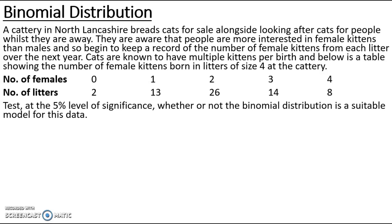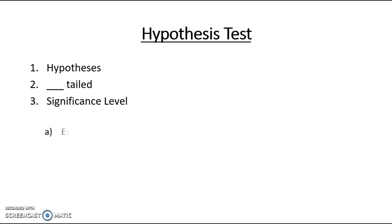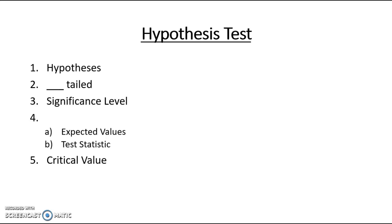Test at the 5% level of significance whether or not the binomial distribution is a suitable model for this data. We're going to go through this example just like any other goodness of fit, looking at our hypothesis test criteria: state our hypotheses, the tail, the significance level, work out expected values to calculate the test statistic, find the critical values in table 6, then compare these and conclude.